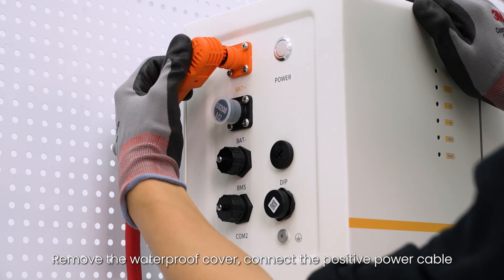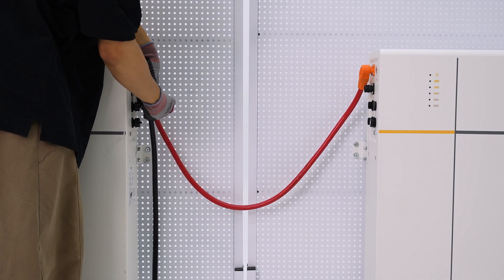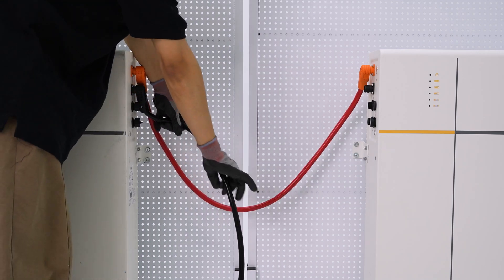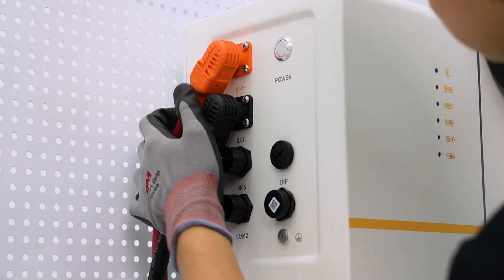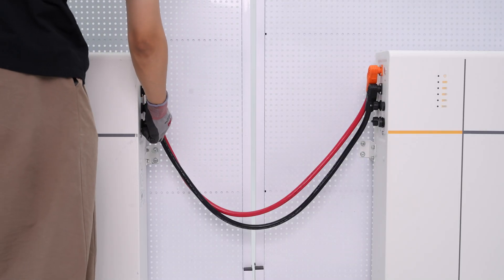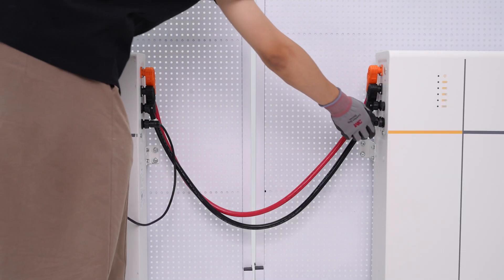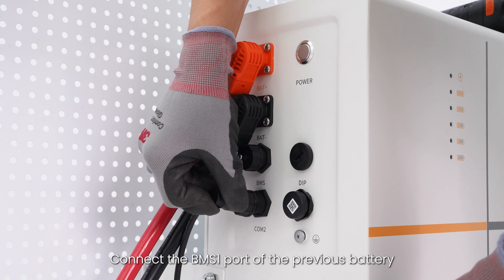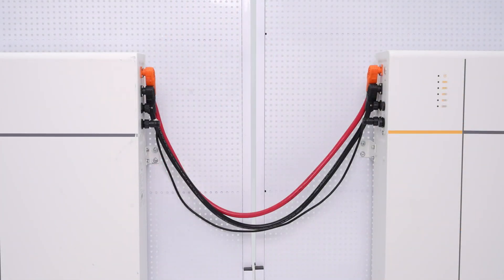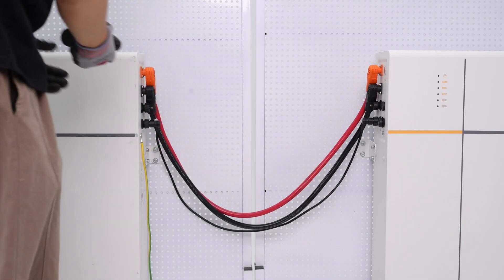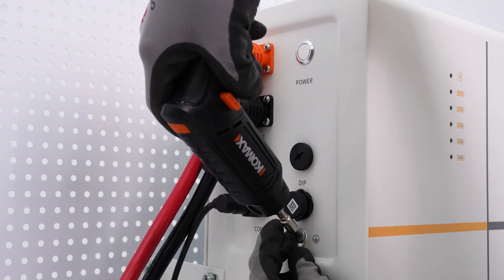Remove the waterproof cover and connect the positive power cable. Remove the waterproof cover and connect the negative power cable. Connect the BMS1 port of the previous battery to BMS2 port of the next battery. Connect the PE cable.